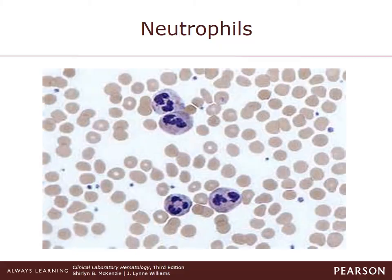Neutrophils are the most abundant of the white blood cells. They are also called segmented neutrophils or polymorphonuclear neutrophils. Their function is to engulf or phagocytize cells and destroy any microorganisms or foreign material present, either directly or after having been labeled for destruction by the immune system. The term segmented refers to their multi-lobed nuclei — two to five lobes — which are purple in color. The cytoplasm is a pinkish color containing very fine purple granules.